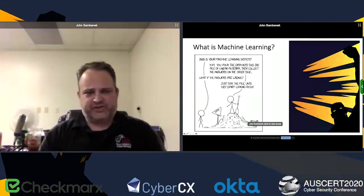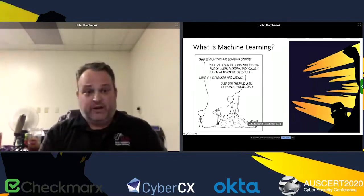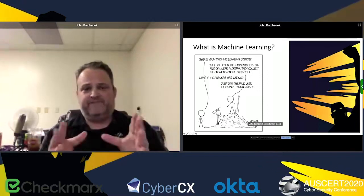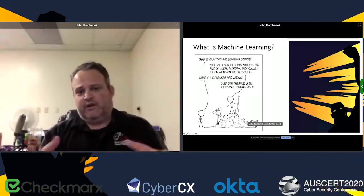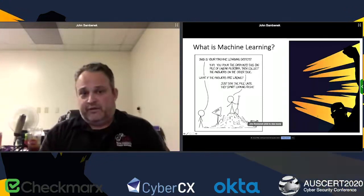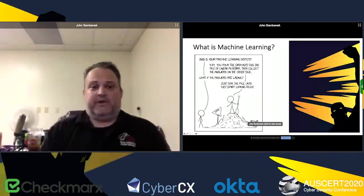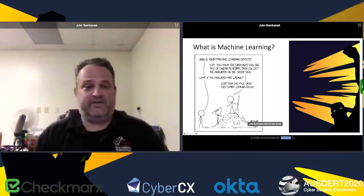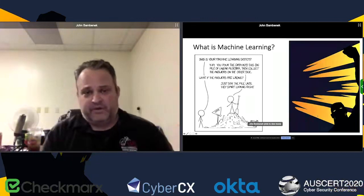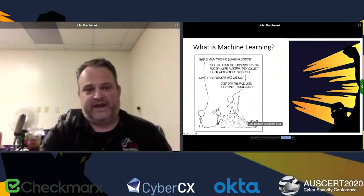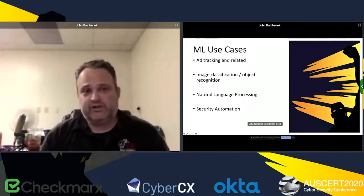A lot of machine learning research and discussion focuses heavily on the algorithms that do linear algebra — that's interesting if you're a mathematician, but by and large the algorithms just work. You can trust the algorithm to do its job, much like anything you program a computer to do — it will do exactly what you tell it. The problem is garbage in, garbage out, and we're going to talk about adversarial behavior as one aspect of that.